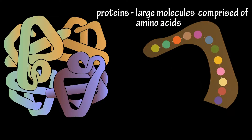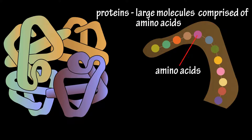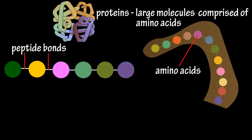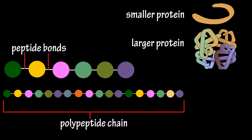Without going in depth, proteins are large molecules made up of amino acids. Amino acids are linked together by peptide bonds to form a polypeptide chain. Some proteins are single polypeptide chains, and other proteins can have folds and many polypeptide chains linked together.